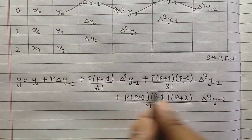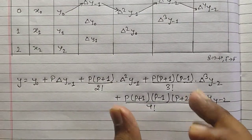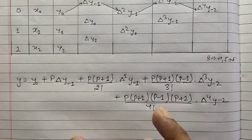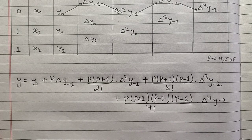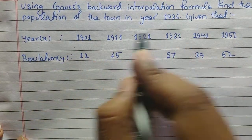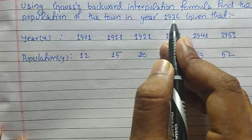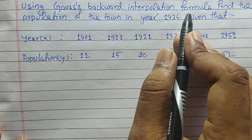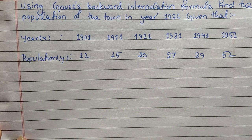Now I have shown you how to derive the formula. Let's move toward the numerical — from the numerical you will be more clear about this method and there will be no need to memorize the formula. Here I have selected a numerical in which we are asked to find the population of the town in year 1936 by Gauss backward interpolation formula. Let's draw the table and find the solution.